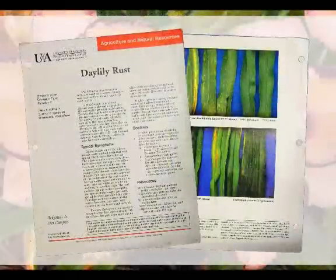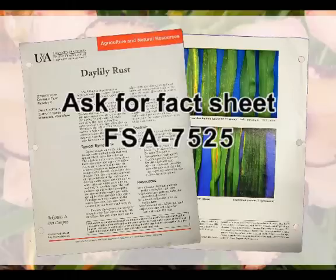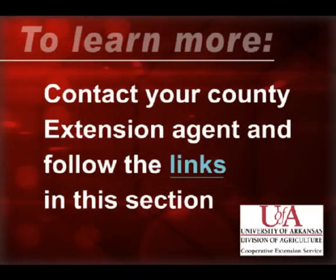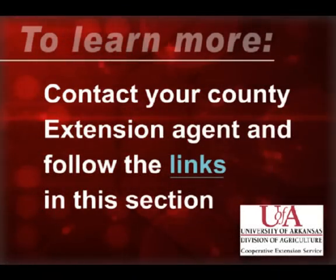There's also a daylily fact sheet available through your local extension office by the number FSA 7525. There's a wealth of information about this disease and some very nice photographs of what this disease looks like on the plant. To learn more, contact your county extension agent and follow the links in this section.